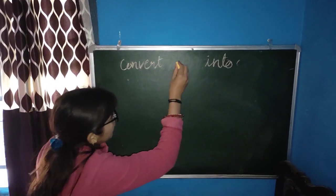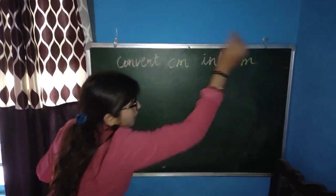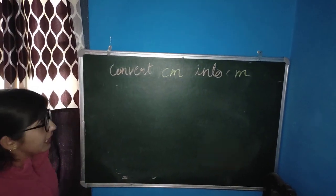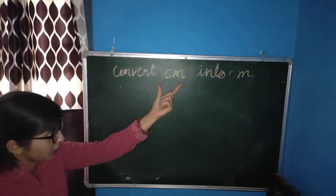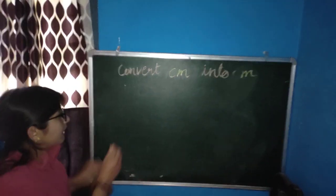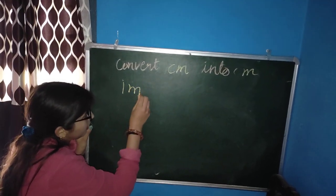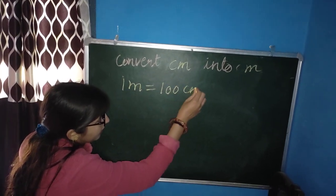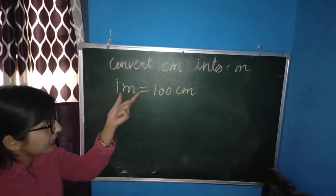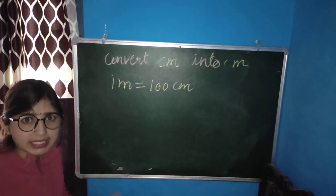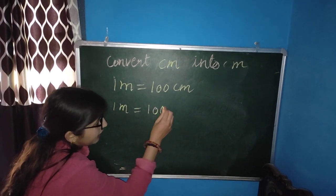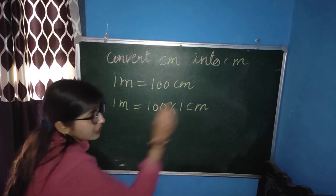Next: how to convert cm into meter. We need to convert cm into meter. We know that cm is the shorter term and meter is the bigger term — meter is bigger than cm. We know 1 meter is equal to 100 cm. So we write: 1 meter is equal to 100 multiplied by 1 cm.